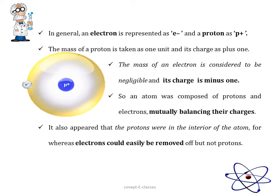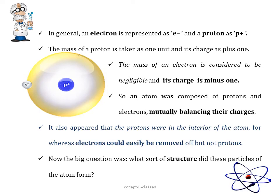If you want to know more about the experiments of J.J. Thomson and E. Goldstein, message me in the comment section. I'll give you a separate lecture on how they discovered electrons and protons. In general, we can say that an electron is represented as e minus and a proton as p plus. The mass of a proton is taken as one unit and its charge is plus one, whereas the mass of an electron is considered to be negligible and its charge is minus one. An atom was composed of protons and electrons mutually balancing their charges. It also appeared that the protons were in the interior of the atom whereas electrons were in the outermost region and could easily be removed. So the next big question was what sort of structure did these particles of atoms form?